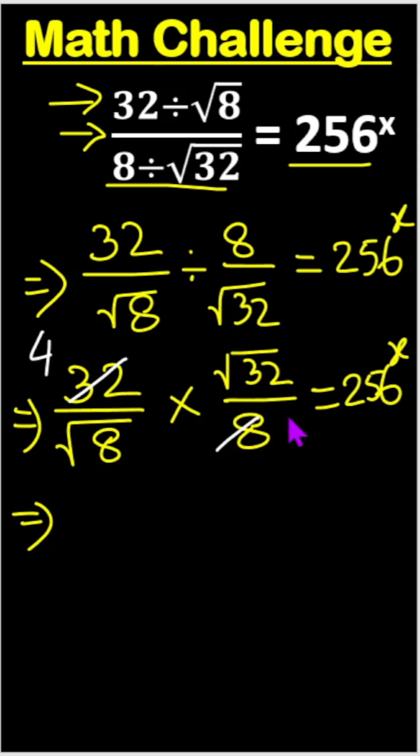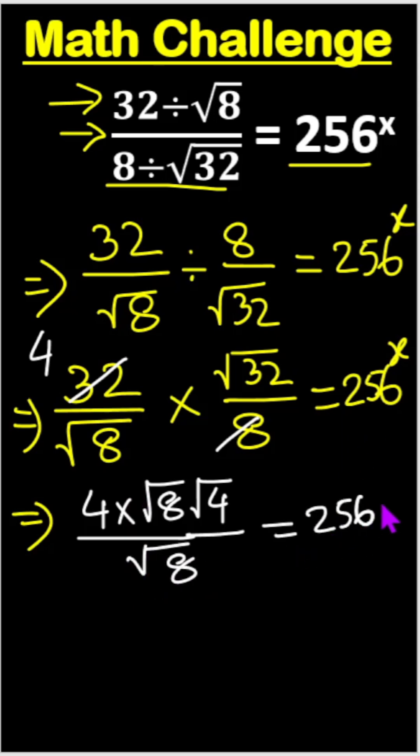This one we can write like 4 times against this root 32, we can write root 8 times root 4 and here divide root 8, right? And equals to 256 to the power x.